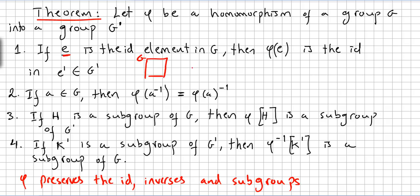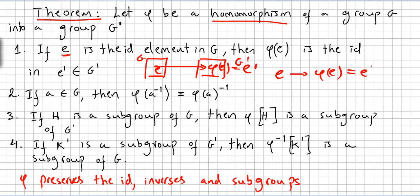So we have G here and G' here. Phi being a homomorphism maps the identity to the identity, and this will be the identity of G'. So Phi of the identity equals the identity of G'. The homomorphism takes the identity of group G into the identity of group G'.